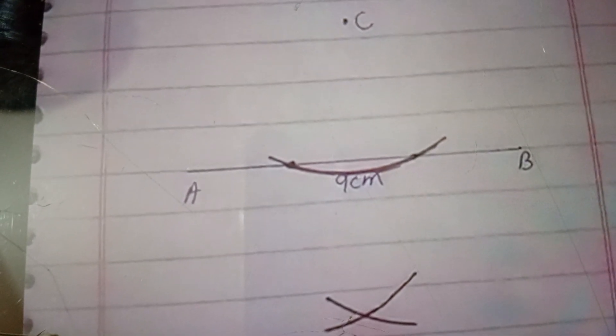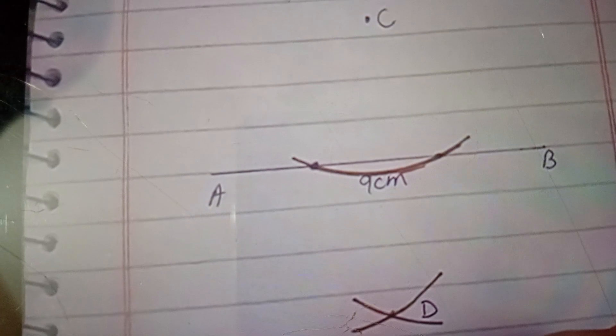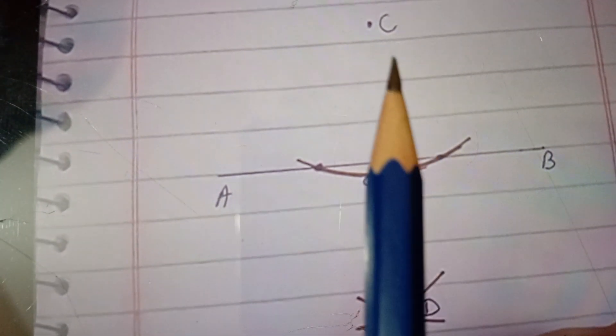अब यहाँ पर एक point मिल जाएगा। उसको हम ऊपर वाले dot से मिला देंगे — यानि इस point से लेकर C तक join कर दें। और इस point को नाम देंगे D। तो हमने point D दे दिया।